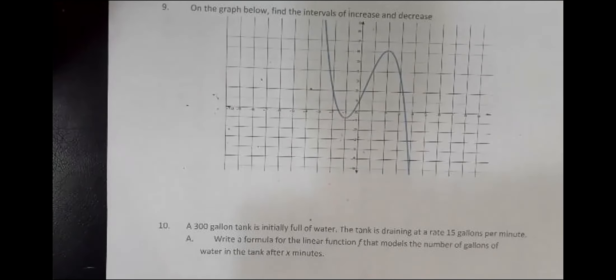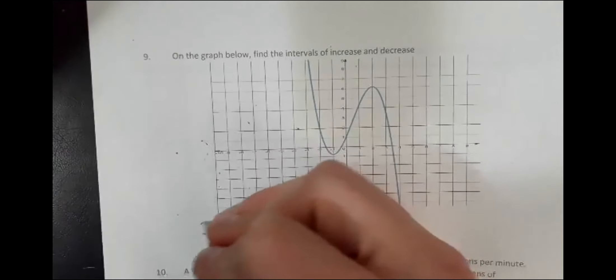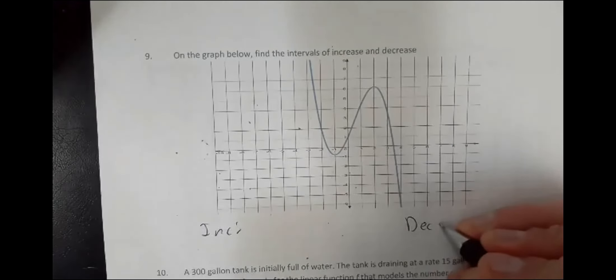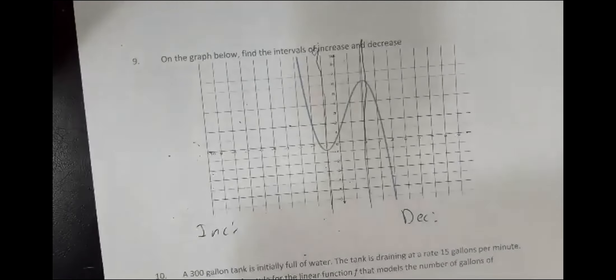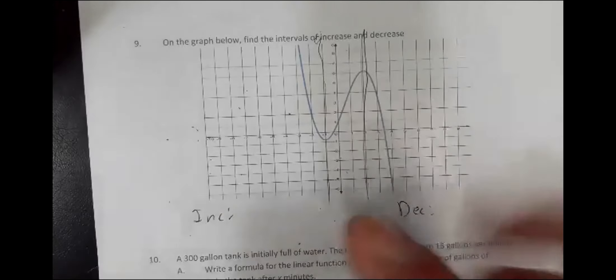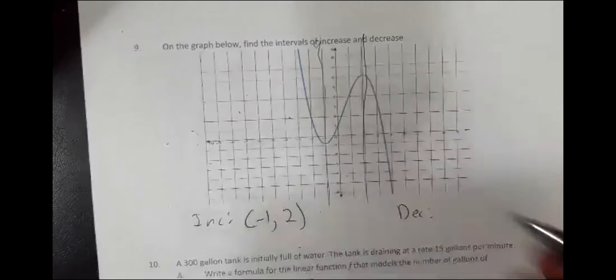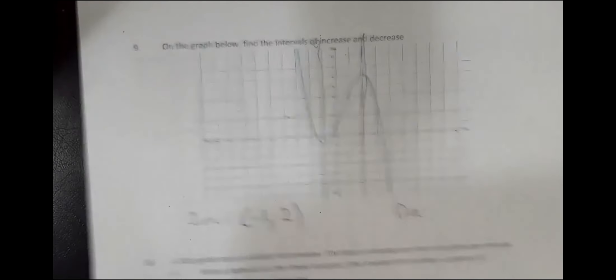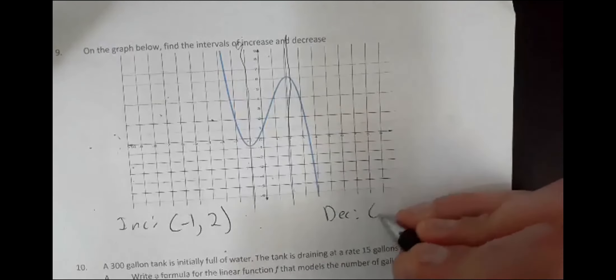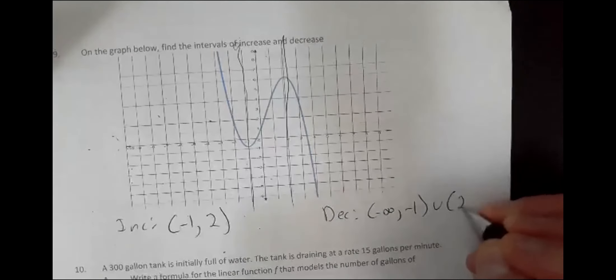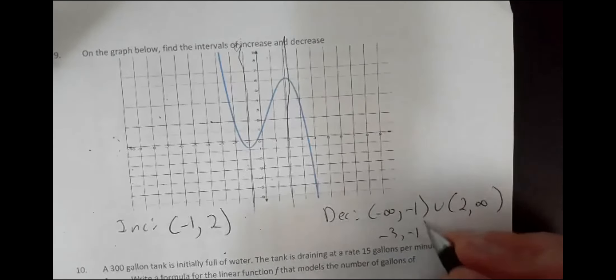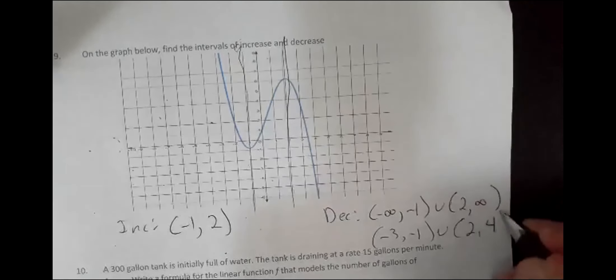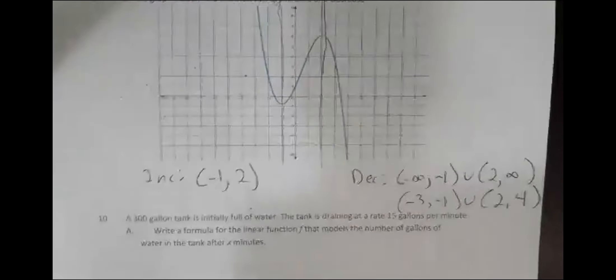Going back over the increasing/decreasing problem: the increasing interval is from minus one to two in the middle. The decreasing part — which I accepted either way — is from negative infinity to minus one and from two to infinity, or if you only saw minus three to minus one, that was also accepted.